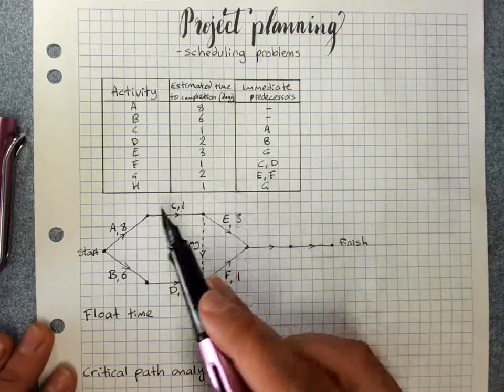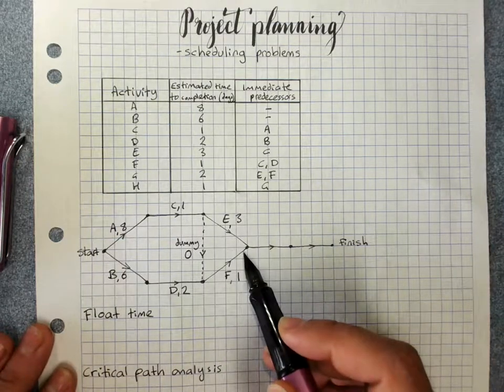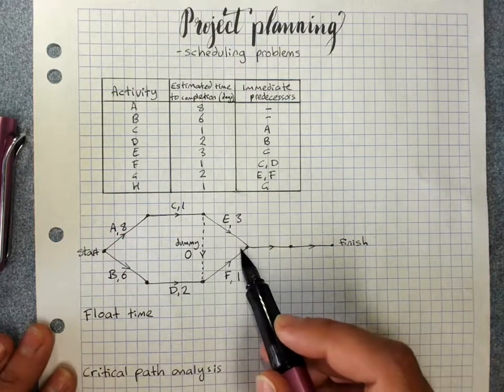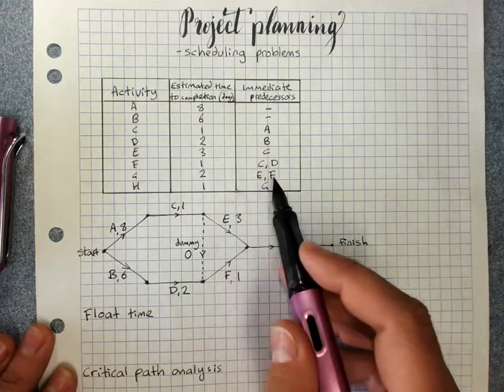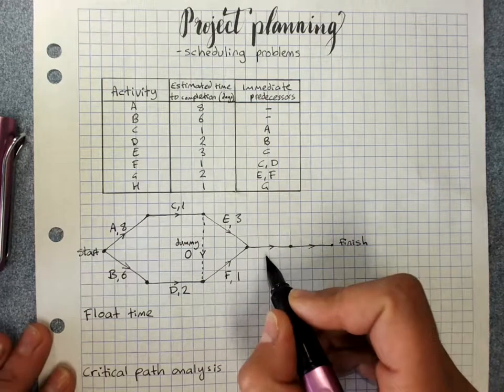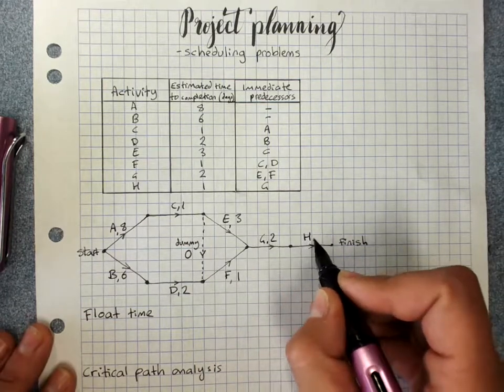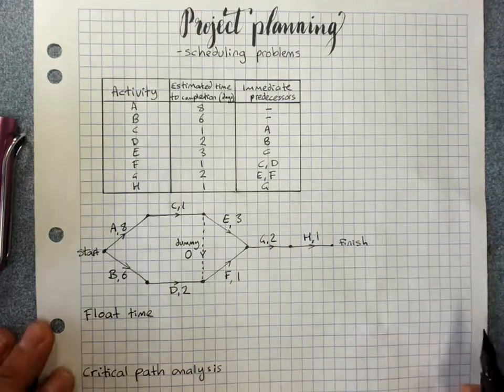So G required E and F. That's why they both feed into here. G is a predecessor for H, so we've got G, 2 and H, 1 to the finish.